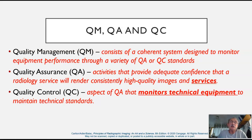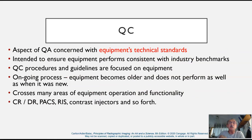There is a difference between quality management, quality assurance, and quality control. Quality management is a coherent system designed to monitor equipment performance through QA and QC standards. Quality assurance involves activities that provide adequate confidence that a radiology service will render consistently high quality images and services. Quality control is the aspect that monitors the technical equipment to maintain certain technical standards — that's the quality control we are primarily concerned with. Quality control is intended to ensure equipment performs consistent with industry benchmarks and manufacturer's benchmarks.